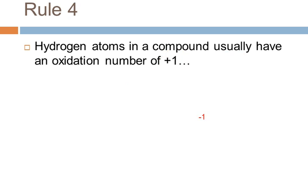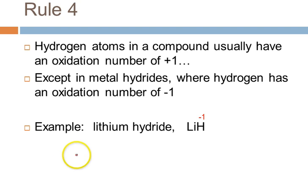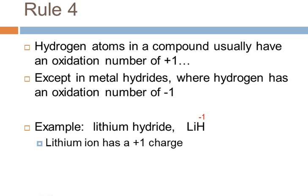Hydrogen is usually plus one, but there is one major exception. In metal hydrides, where hydrogen is actually the anion, the hydrogen has an oxidation number of minus one. For example, in lithium hydride, lithium is a group one metal cation with an oxidation number of plus one, because it transferred an electron to the hydrogen, which accepted it. So the lithium ion is plus one and the hydride is minus one. This exception for metal hydrides doesn't come up all that often, but you need to know it.